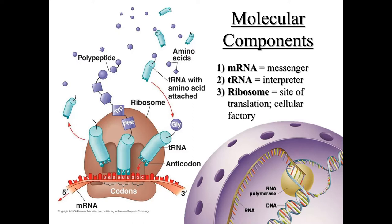As the tRNA molecule arrives at the ribosome, it bears a specific amino acid connected to the three-prime attachment site. It's attached by an enzyme called aminoacyl-tRNA synthetase. That amino acid correlates to the mRNA codon and is opposite of your anticodon. When they base pair, the amino acid carried by the tRNA is passed onto a growing polypeptide chain. Your tRNA acts as the translator between mRNA and protein by bringing in that specific amino acid coded for by the mRNA codon.